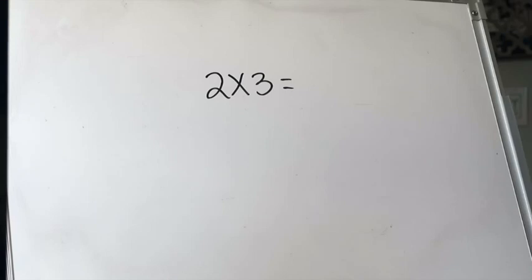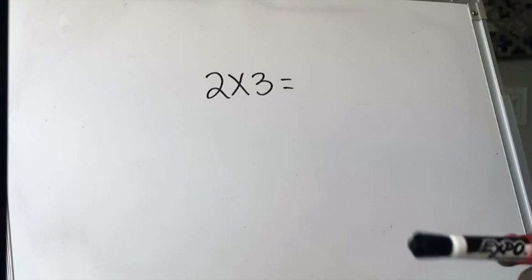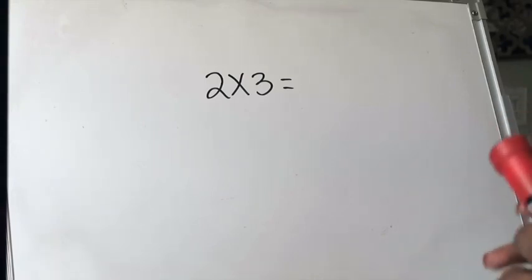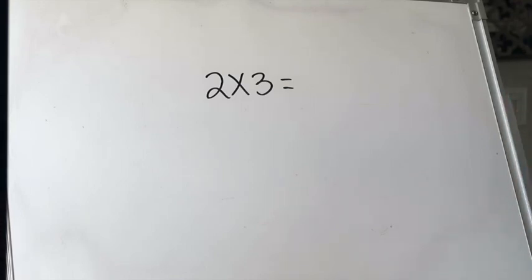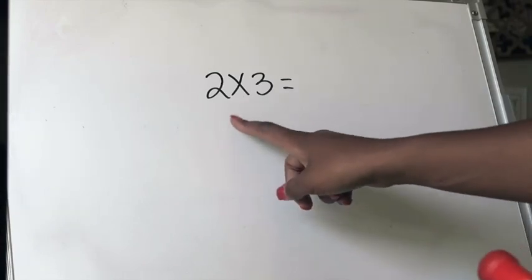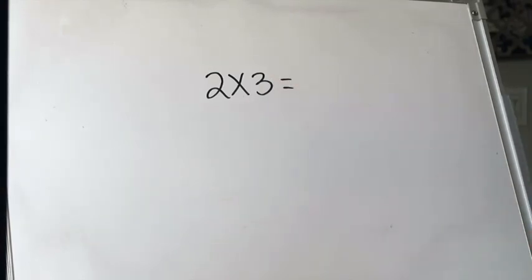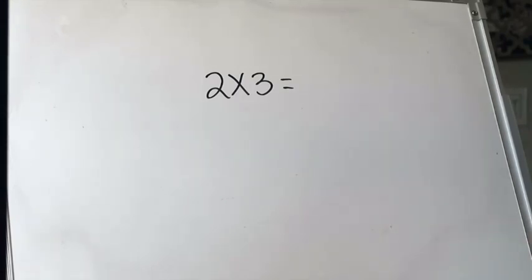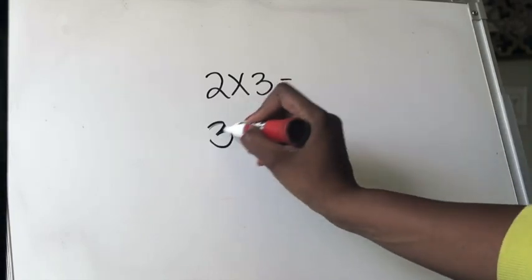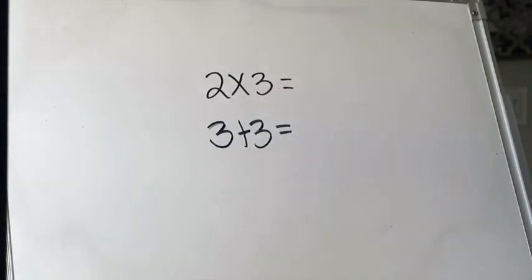We're going to start off with a very simple problem where we're only multiplying by two. Multiplying by facts of two should feel like a review because you're really just counting by two. When you're multiplying by two, what that really means is you're just doubling that second factor. So when I look at two times three, I should recognize that two times three is the same as three plus three — I'm doubling my three, adding three to itself two times.